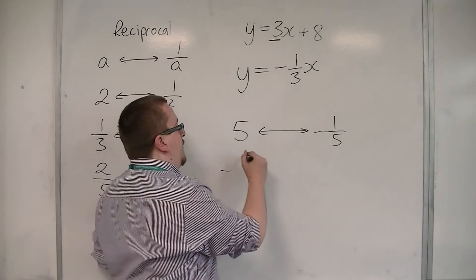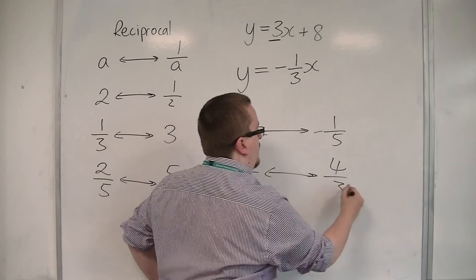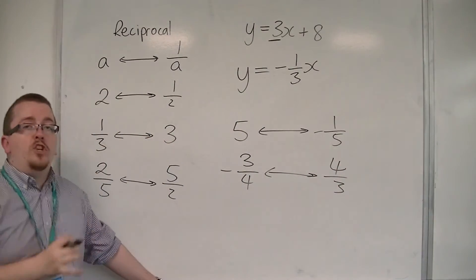If we were looking at minus 3 quarters, then the negative reciprocal is 4 thirds. So the fraction flips and I change the sign.